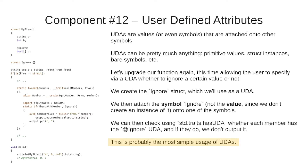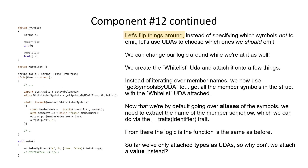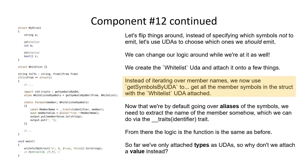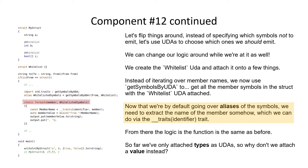This is probably the most simple usage of UDAs, so let's flip things around and make a whitelist instead. We create the Whitelist UDA and attach it onto a few fields. Instead of iterating over member names we now use getSymbolsByUDA to get all member symbols in the struct that have the Whitelist UDA attached. Since we're now working with aliases of symbols we need to extract the member name, which we can do via the traits identifier trait. From there the logic in the function is the same as before.